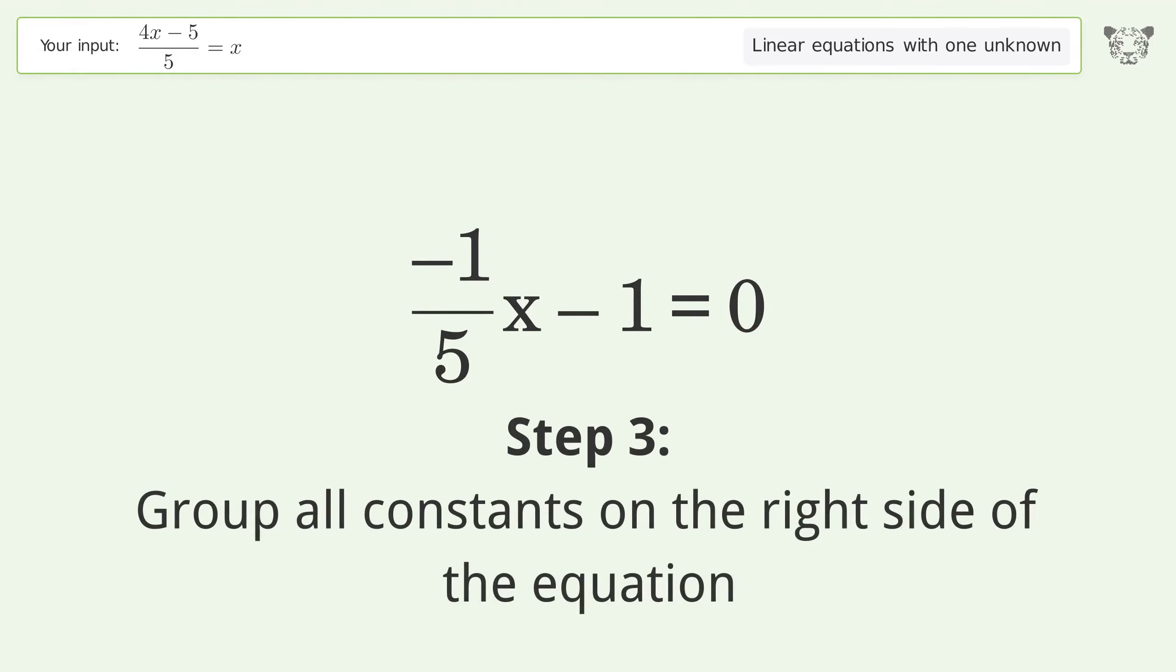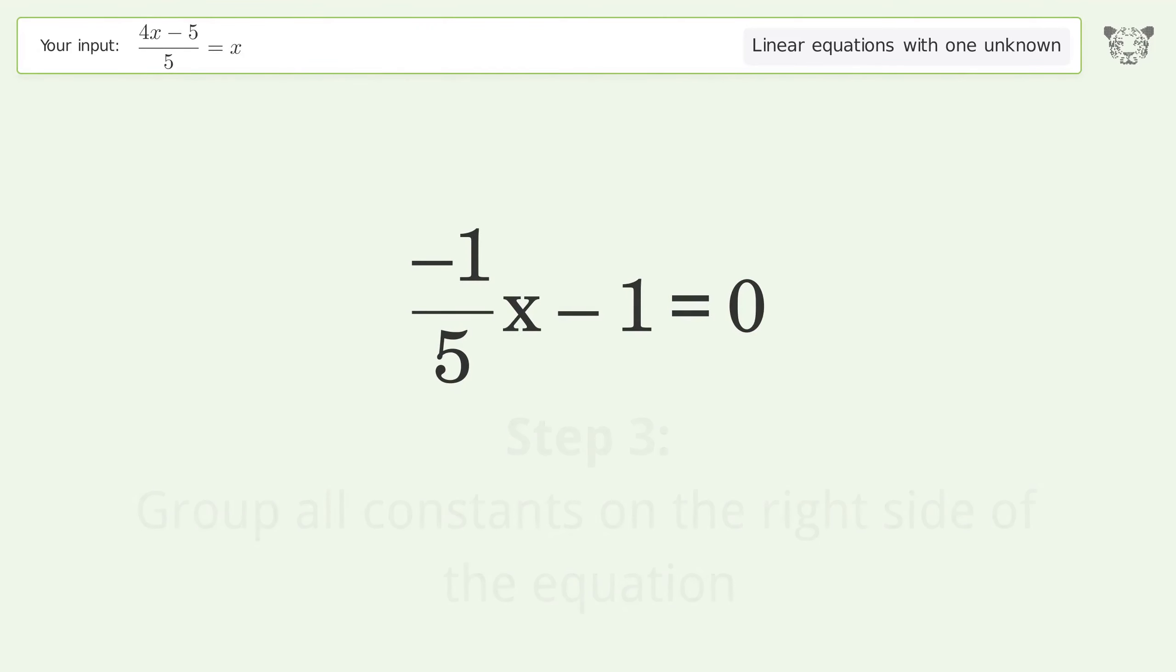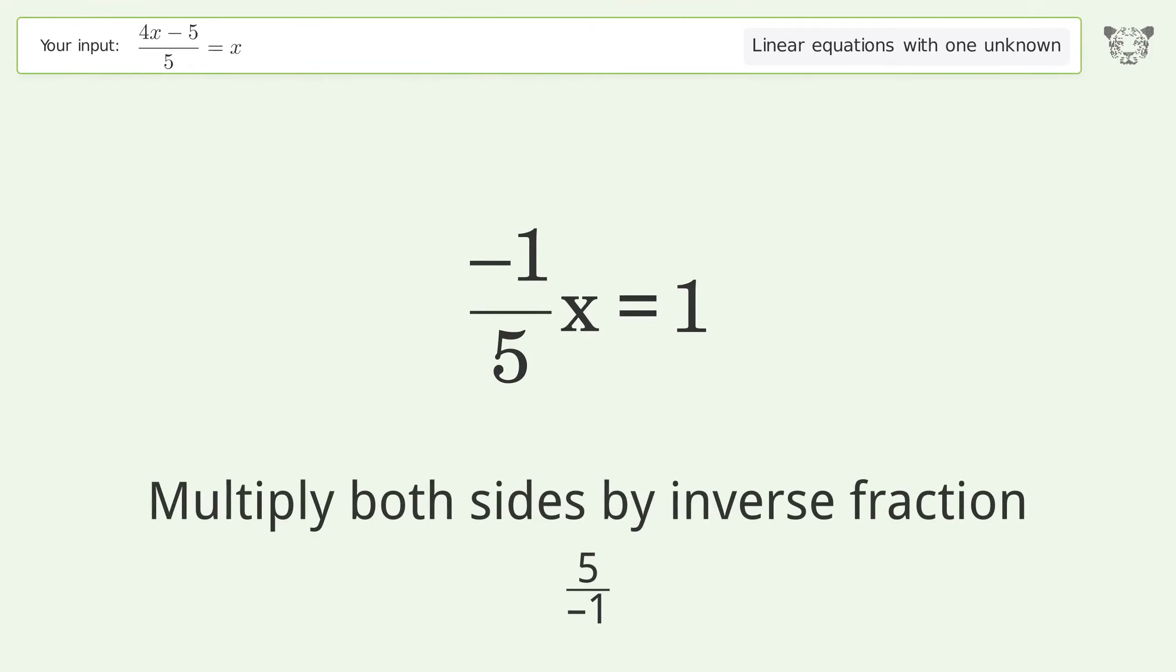Group all constants on the right side of the equation. Add 1 to both sides. Simplify the arithmetic. Isolate the x. Multiply both sides by the inverse fraction 5 over negative 1.